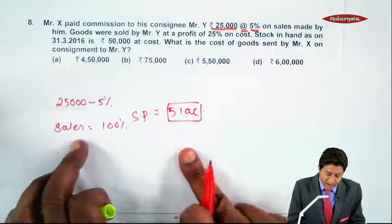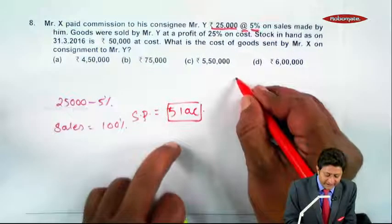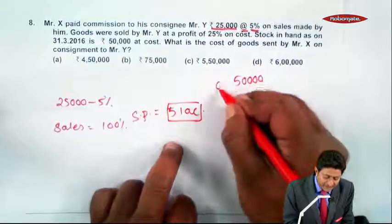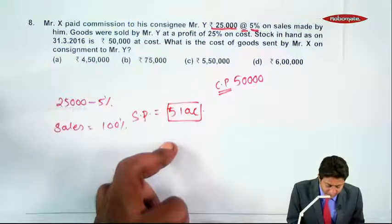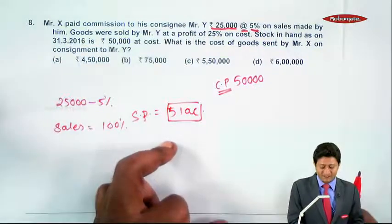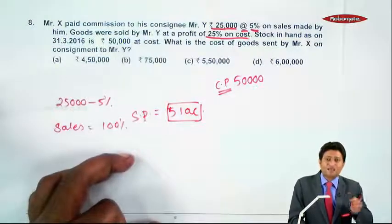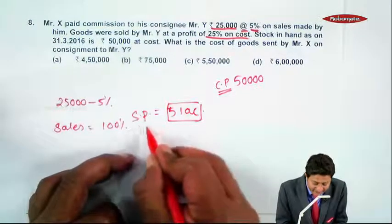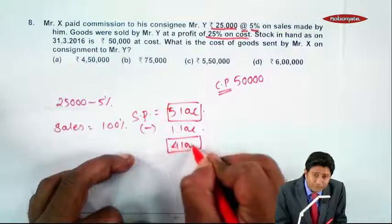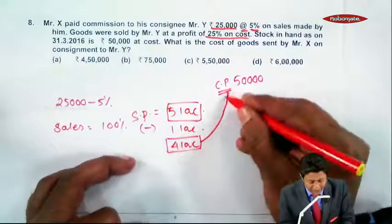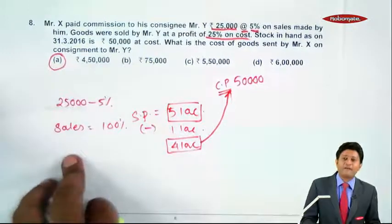Stock in hand on 31st March 2016 is ₹50,000 at cost. Even after sales, ₹50,000 cost price of goods remain in closing stock. What is the cost of goods sent by Mr. X on consignment to Mr. Y? This is 25% profit on cost, which means one-fourth on cost is one-fifth on sales. So profit is ₹1 lakh. Cost price of goods sold is ₹4 lakh plus cost price of remaining goods is ₹50,000, so total goods sent on consignment will be ₹4,50,000.